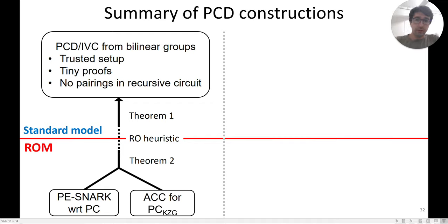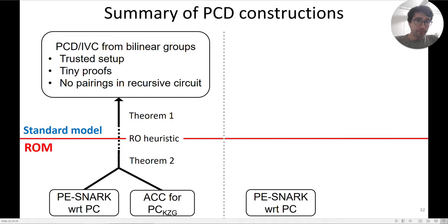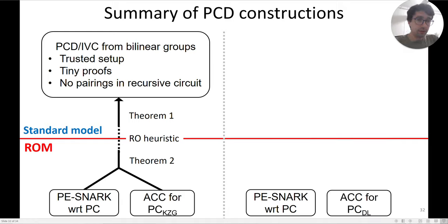What you get is PCD and IVC from bilinear groups with a trusted setup, but in return you get very small proofs. Moreover, compared to previous approaches, an advantage of this construction is that you don't do any pairings in the recursive circuit, which means this will in principle be much more efficient.